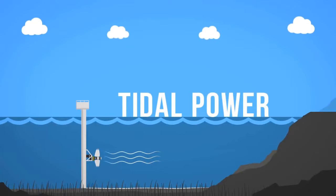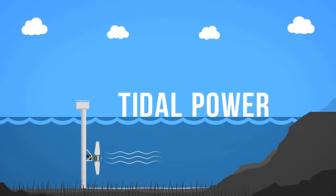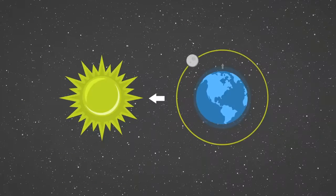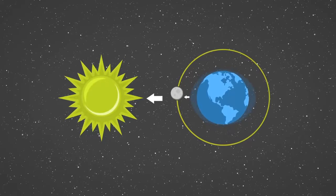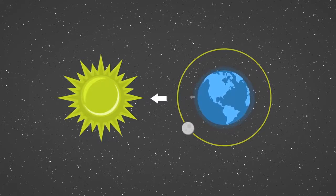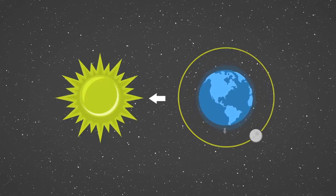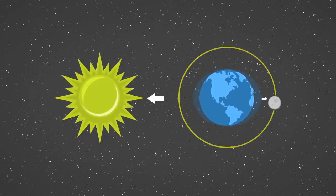Tidal power is a form of hydropower that converts the energy from the natural rise and fall of the tides into electricity. Tides are caused by the combined effects of gravitational forces exerted by the moon, the sun, and the rotation of the earth.